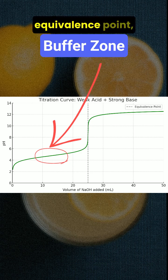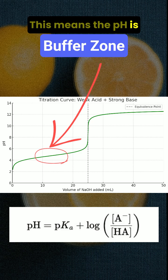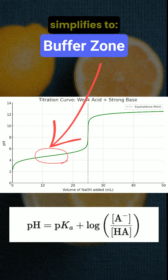At the half equivalence point the concentrations of the weak acid and its conjugate base are equal. This means the pH is equal to the pKa of the acid. The Henderson-Hasselbalch equation simplifies to pH equals pKa at this point.